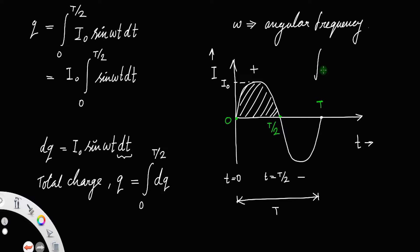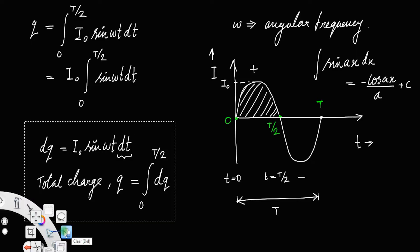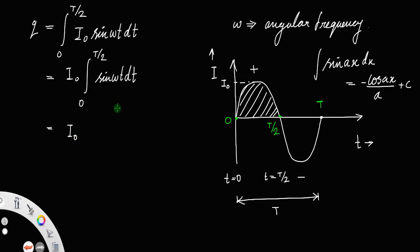We know the integral formula: ∫ sin(ax) dx = −cos(ax)/a. Here ω is the constant playing the role of a. Since it is a definite integral, we do not need to write the constant of integration c. Simplifying, we get i₀ × [−cos(ωt)/ω] evaluated from 0 to T/2.